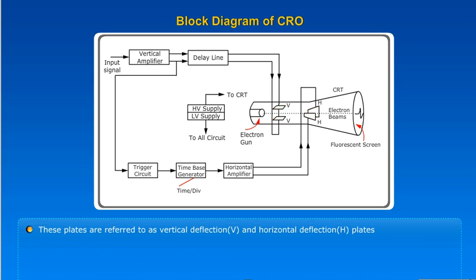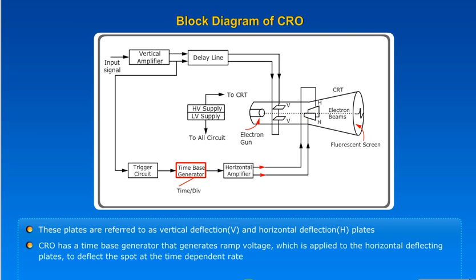These plates are referred to as vertical deflection V and horizontal deflection H plates. CRO has a time-based generator that generates ramp voltage which is applied to the horizontal deflecting plates to deflect the spot at a time-dependent rate.